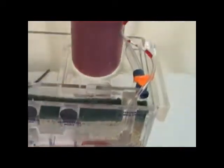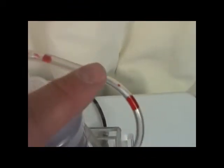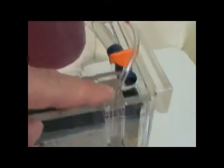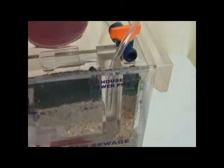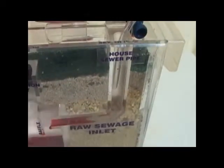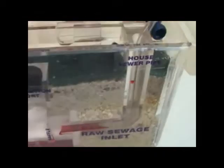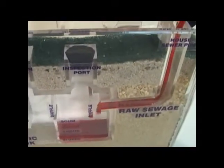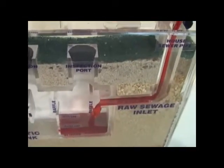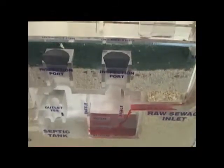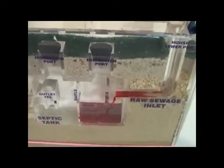You can see that I've taken the tubing that comes off the top of the bottle, run it down into the house sewer pipeline, and pushed it down so it sits at the bottom. When I squeeze that, it puts the waste into the model. At this point, I'm just filling up the first chamber.